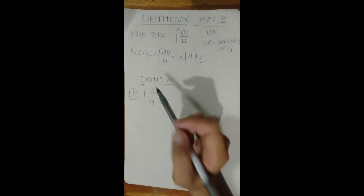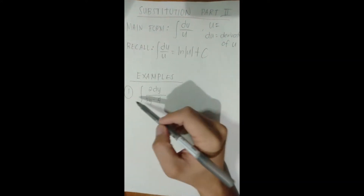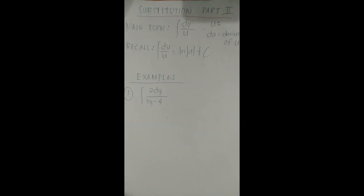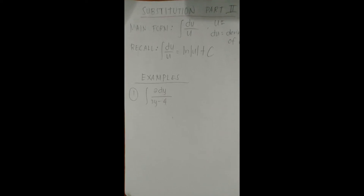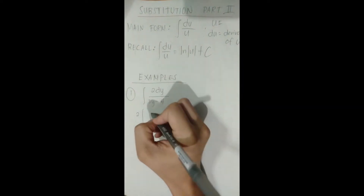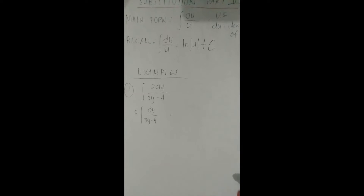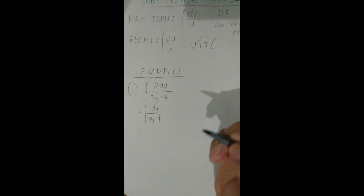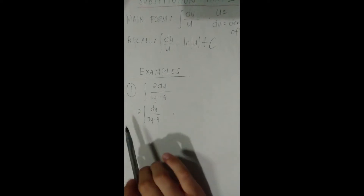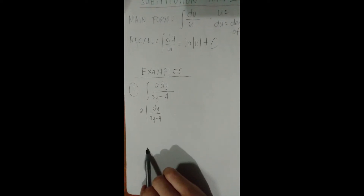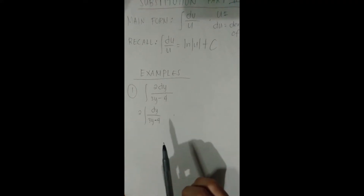Let's try a basic example. The function is the integral of 2 dy / (3y − 4). Since we have the constant 2, we can factor it out of the integral sign, giving 2 · integral of dy / (3y − 4). Note that the variable here is y — variables can be y, z, or anything; it doesn't always have to be x.